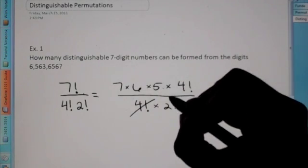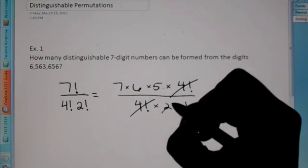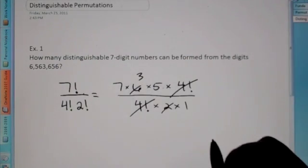So now we could reduce this by marking out the fours. Two reduces with six, that becomes a three.